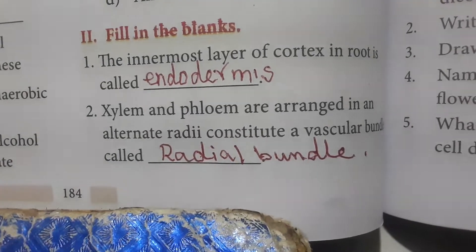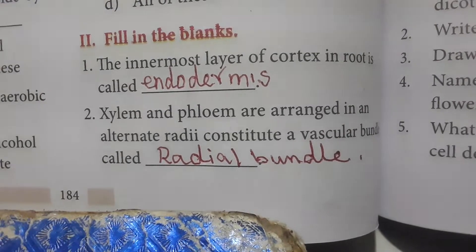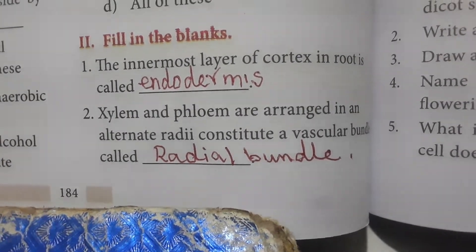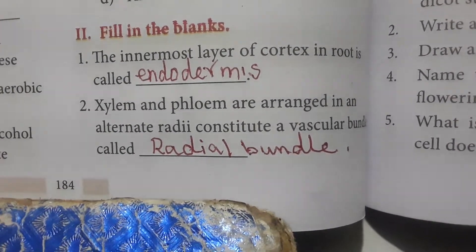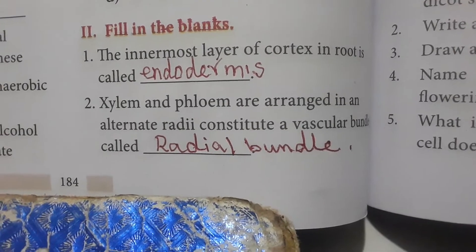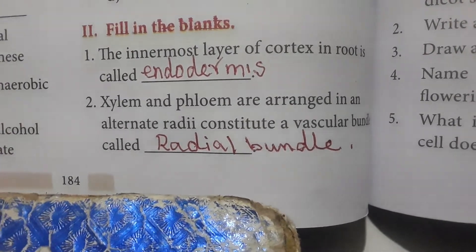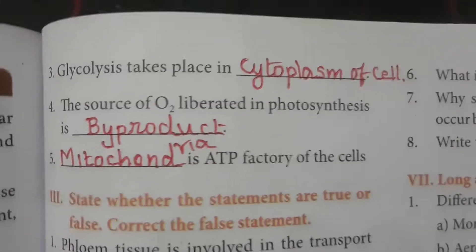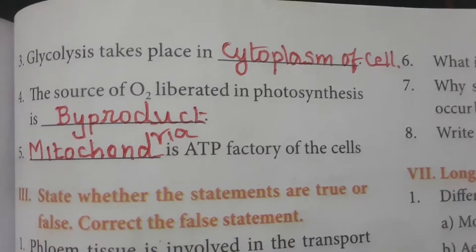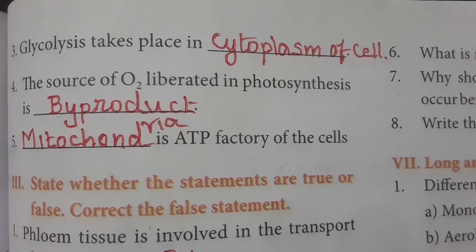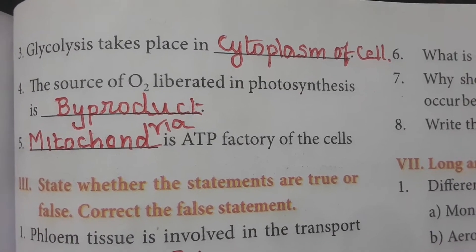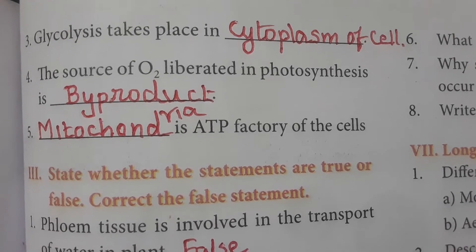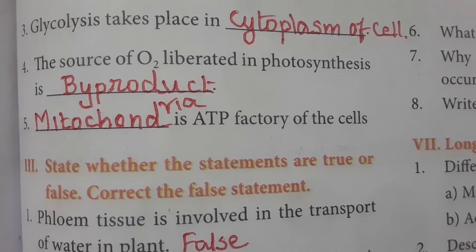Fill in the blanks. The innermost layer of the cortex in the root is called endodermis. Xylem and phloem arranged in alternate radii constitute a vascular bundle called a radial bundle. Glycolysis takes place in the cytoplasm of the cell.